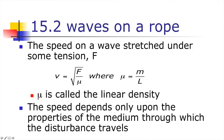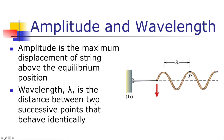Amplitude is the maximum displacement of the string above the equilibrium position — how high the string moves from its equilibrium. If you use the wave equation, you'd incorporate positive and negative signs, but for now it's just defined as that maximum displacement. Wavelength is the distance between two successive crests or two successive troughs.